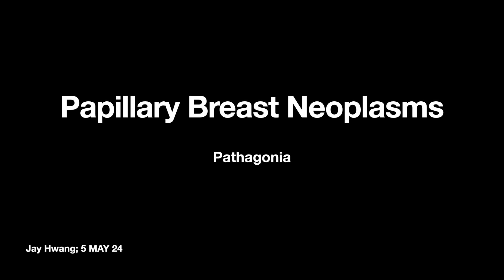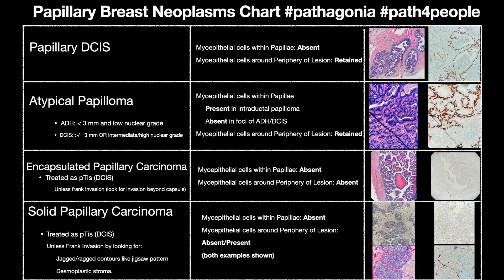Hello, welcome to Pathagonia. This is Jay. Today we're going to talk about papillary breast neoplasms. I find these entities confusing because of the different myoepithelial patterns they have and how sometimes they can look similar to each other. We're going to talk about papillary DCIS, atypical papilloma, encapsulated papillary carcinoma, and solid papillary carcinoma. So let's begin.